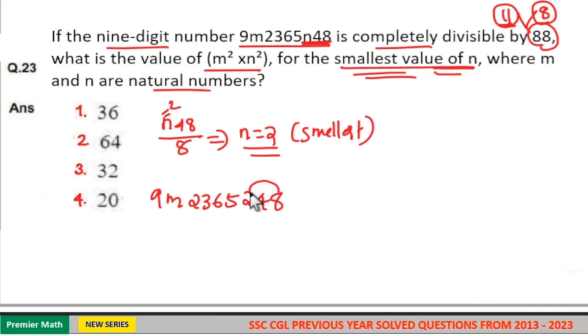Odd place sum is 8 plus 2, 10. 10 plus 6, 16. 16 plus 2, 18. 18 plus 9 equals 27. Now take the even place sum. 4 plus 5, 9. 9 plus 3, 12. 12 plus m is the even place sum.